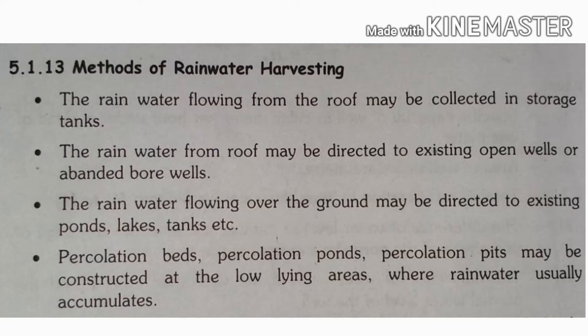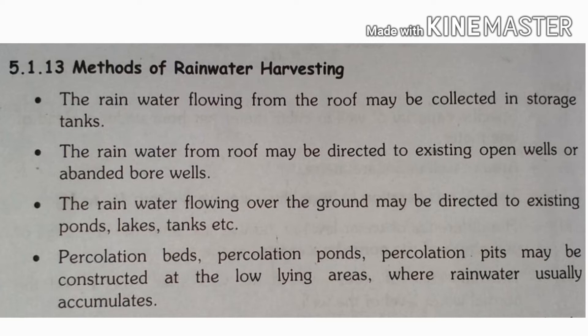Methods of rainwater harvesting. What is the meaning of rainwater harvesting? Rainwater flowing from the roof may be collected in storage tanks. If we have rainwater on the roof, we collect it in a tank. That is the first method — we collect rainwater from the roof.